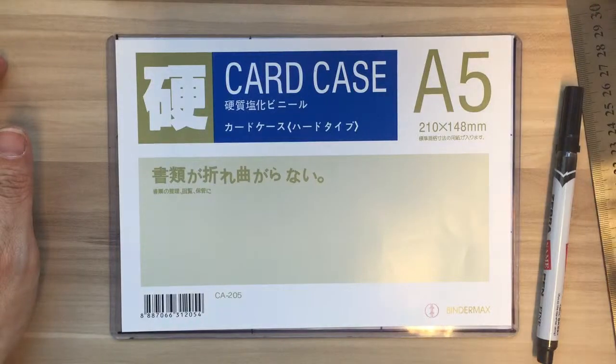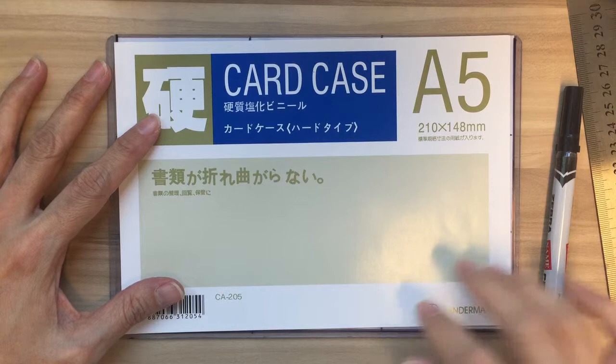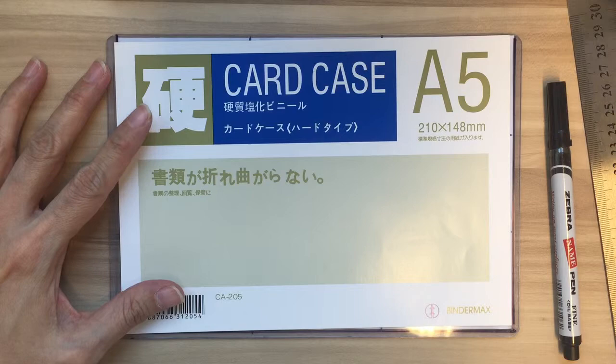To make your viewfinder, you need your A5 or A6 card case, a permanent marker, a ruler, and a template.